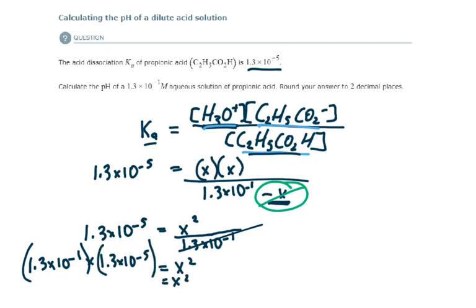I get that X squared is equal to 1.6 times 10 to the minus 6. I'm going to take the square root of both sides. And that leaves me with X is equal to 0.0013.